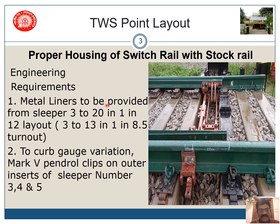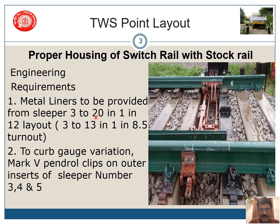The metal liners should be provided from sleeper number 3 to 20 in a 1 in 12 layout. The metal liners provided for ERC shall be provided up to the 20th sleeper; after that, you can provide nylon liners. It is suggested to provide metal liners up to sleeper 20 from sleeper 3. If it is 1 in 8.5, you have to provide from sleeper 3 to 13.